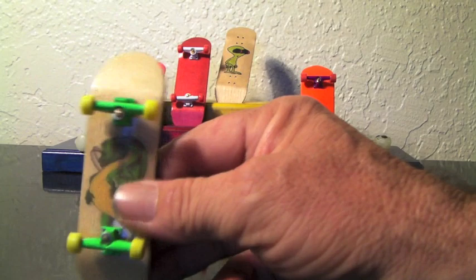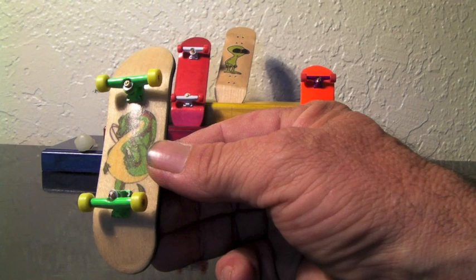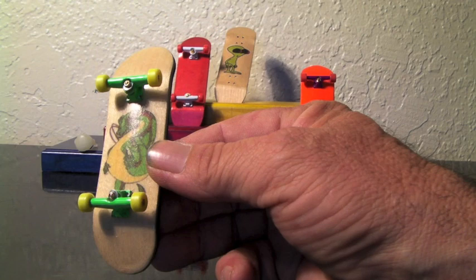This particular one has some graphics of a dragon on it. I can actually do any graphics that you prefer, just give me a file, we can set that up. Now this one here is set up with my bearing wheels. These here are injection molded. These were the first bearing wheels.